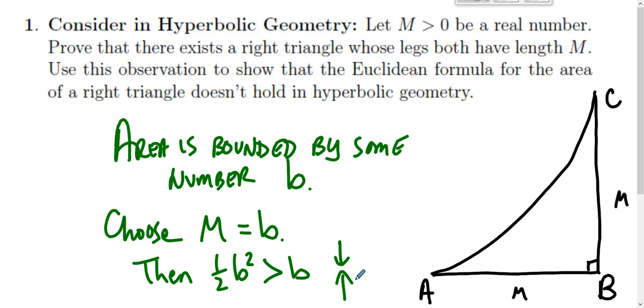So it could be that for certain values of M it happens that one half times M squared is the area of the triangle in hyperbolic geometry. It could be, but it absolutely is the case that if this happens, then one half M squared is greater than the actual area could possibly be.